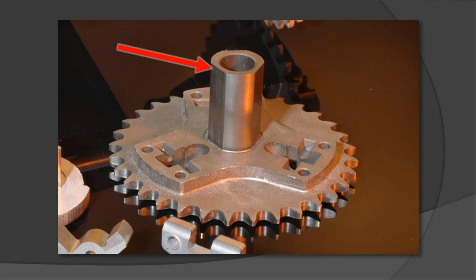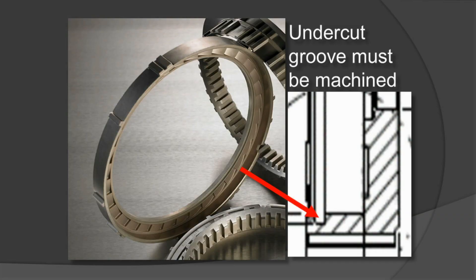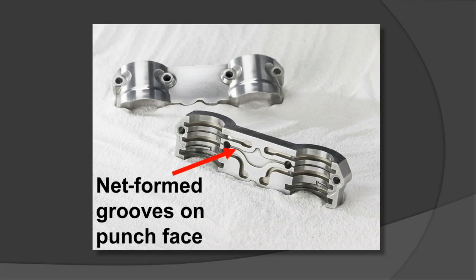In some instances there are features that can't be pressed into the part. Grooves are a good example of features that typically are not pressed into the component. Here you see a large ring where we're machining a groove according to the drawing because that part cannot be pressed. These are examples of net-formed grooves on a punch face, and these can be compacted into the PM part.